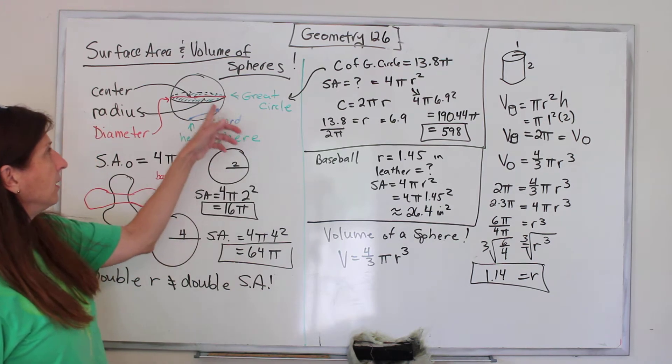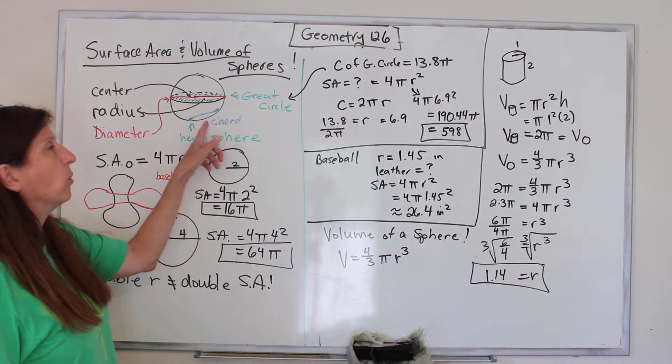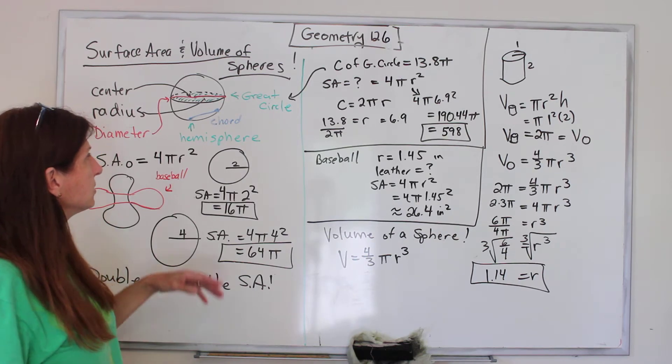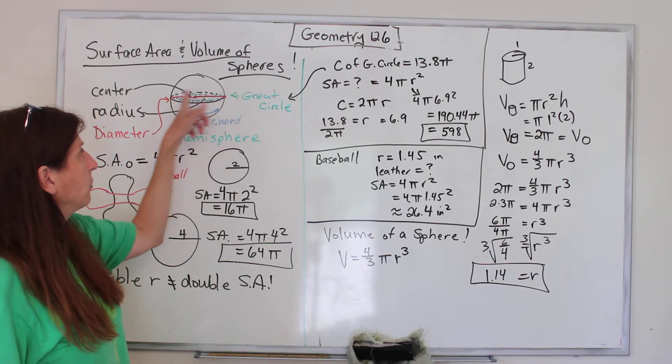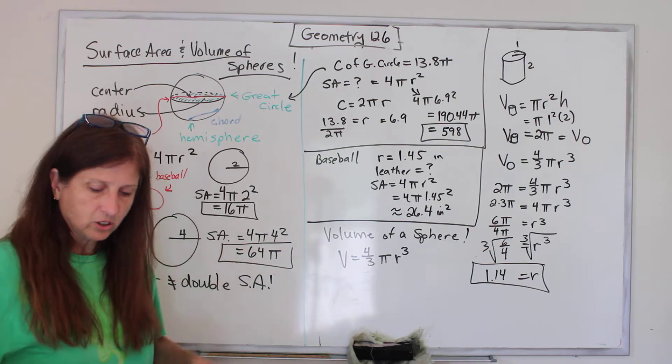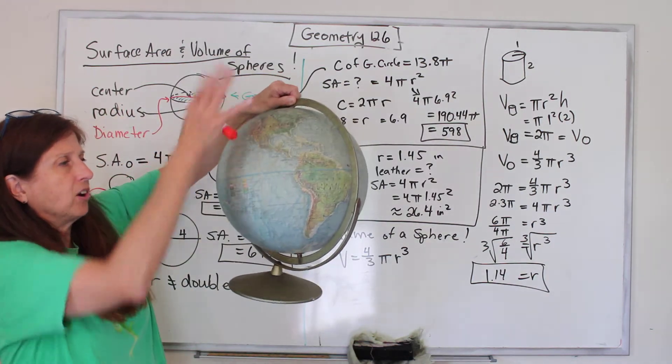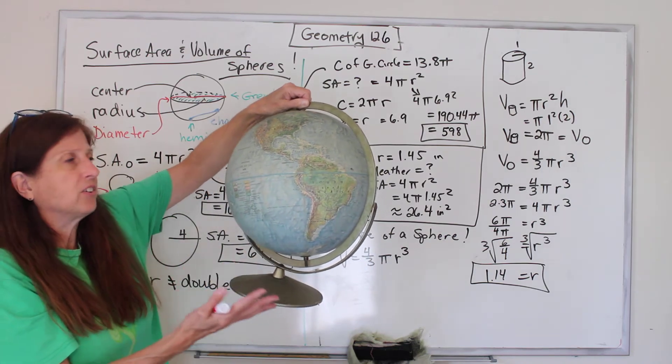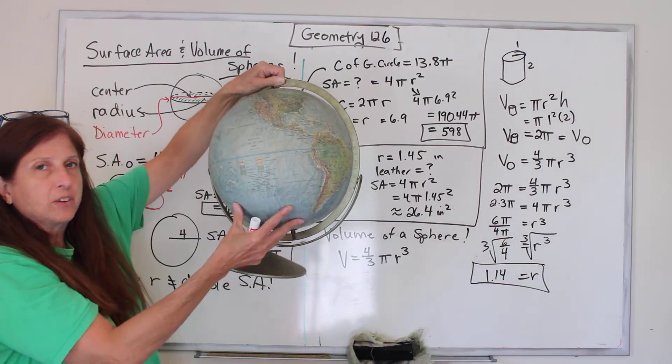If you draw a line somewhere else that's not the biggest, it's called a chord, just like how we learned about chords in regular circles. If you draw the equator around and make the Great Circle, it cuts the sphere into two halves called hemispheres.